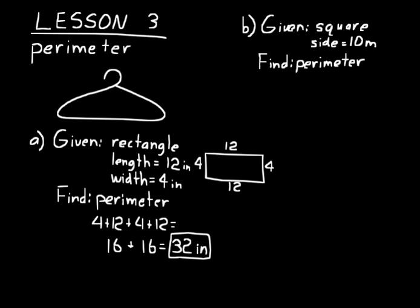Let's do another one. You've been given a square with a side length of 10 meters. Remember, a square has all sides the same length, so you just need the length of one side. We can draw a picture and add all sides, but it's simpler to multiply 10 by 4, because 10 plus 10 plus 10 plus 10 equals 4 times 10, which equals 40 meters. That's the perimeter around that square.